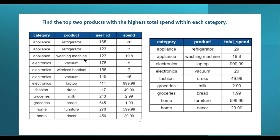Let's calculate the total amount spent for the refrigerator product. The total amount spent is 26 plus 3, which comes out to 29. So for the appliance category, the refrigerator has a total spend of 29, and the washing machine has a total spend of 19.8. Since we need the top two products with the highest total spend within each category, both of these are the top two products here.